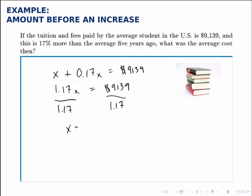So x therefore equals 9,139 divided by 1.17, which is 7,811. Therefore, the average cost five years ago was $7,811.